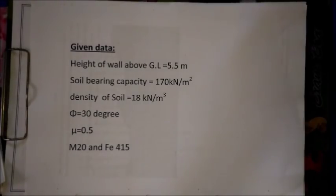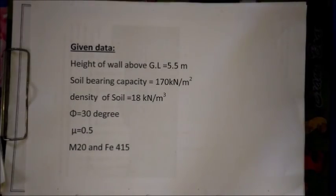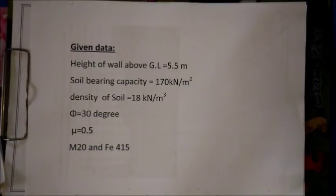Now let's see which data are already given. The height of the wall above ground level is 5.5 meters. Soil bearing capacity is 170 kN/m². Density of soil is 18 kN/m³. Phi, the internal friction angle of the soil, is 30 degrees. Mu, the coefficient of friction, is 0.5. And we are using M20 concrete and Fe415 steel.